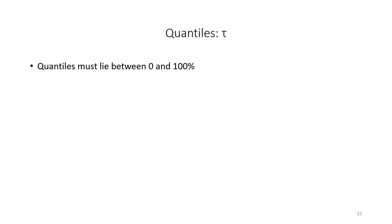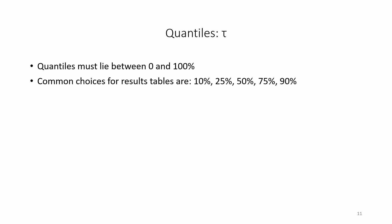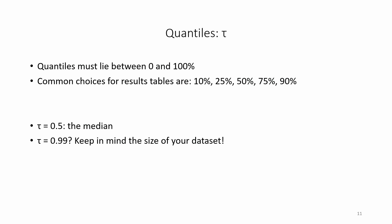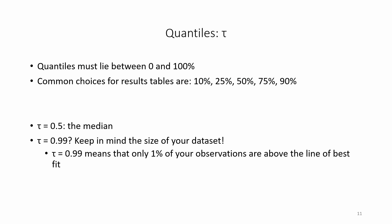Quantile regression solutions are evaluated at specific quantiles between 0% and 100%. Common choices for reporting results are 10%, 25%, 50%, 75%, and 90%. When tau equals 0.5, we evaluate at the median — also known as median regression. When tau equals 0.9, we evaluate at the 90th percentile. Taking an extreme value such as tau equals 0.99 is not always recommended; it depends on the size of your dataset, since only 1% of observations will be above the line of best fit.